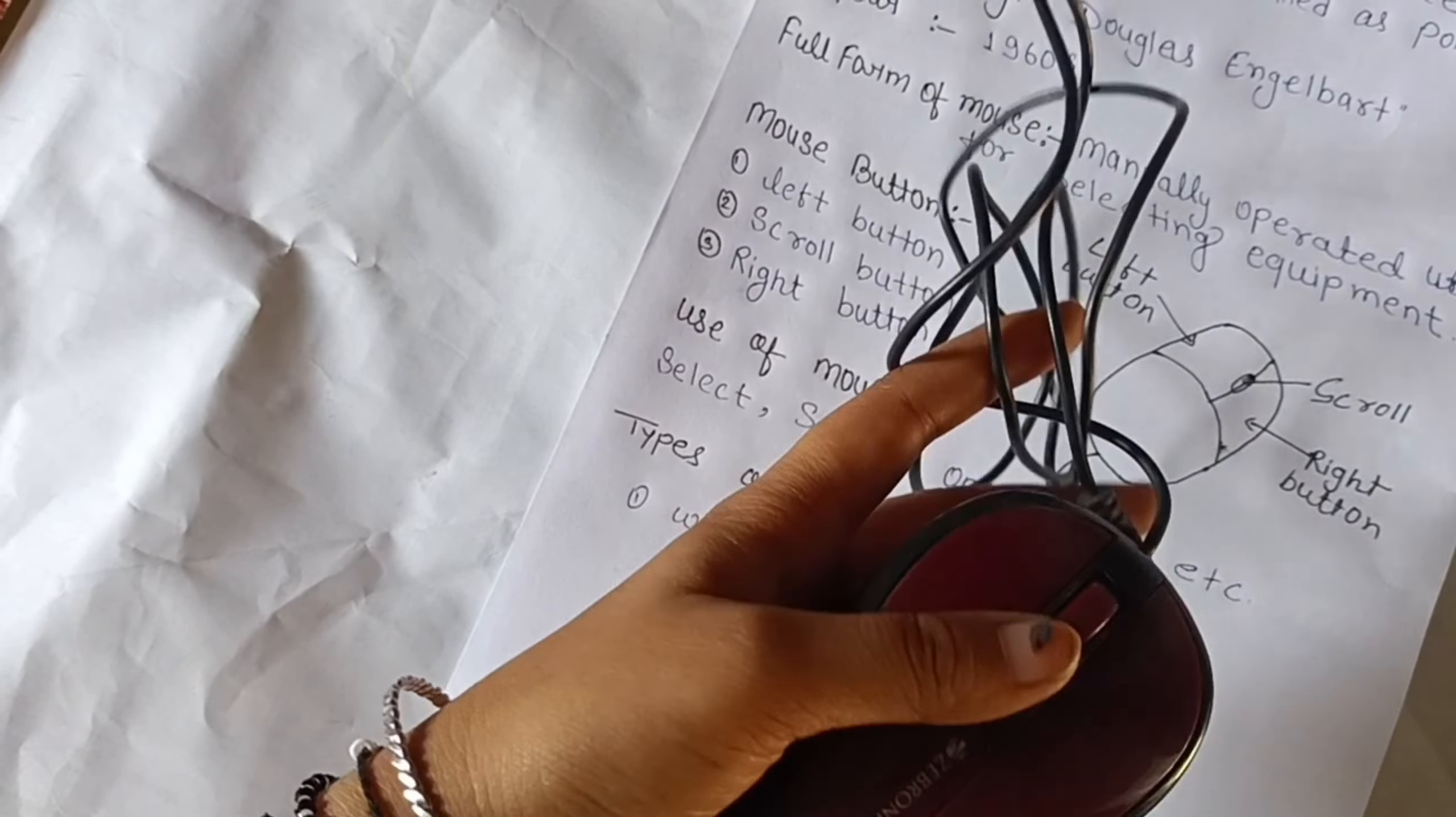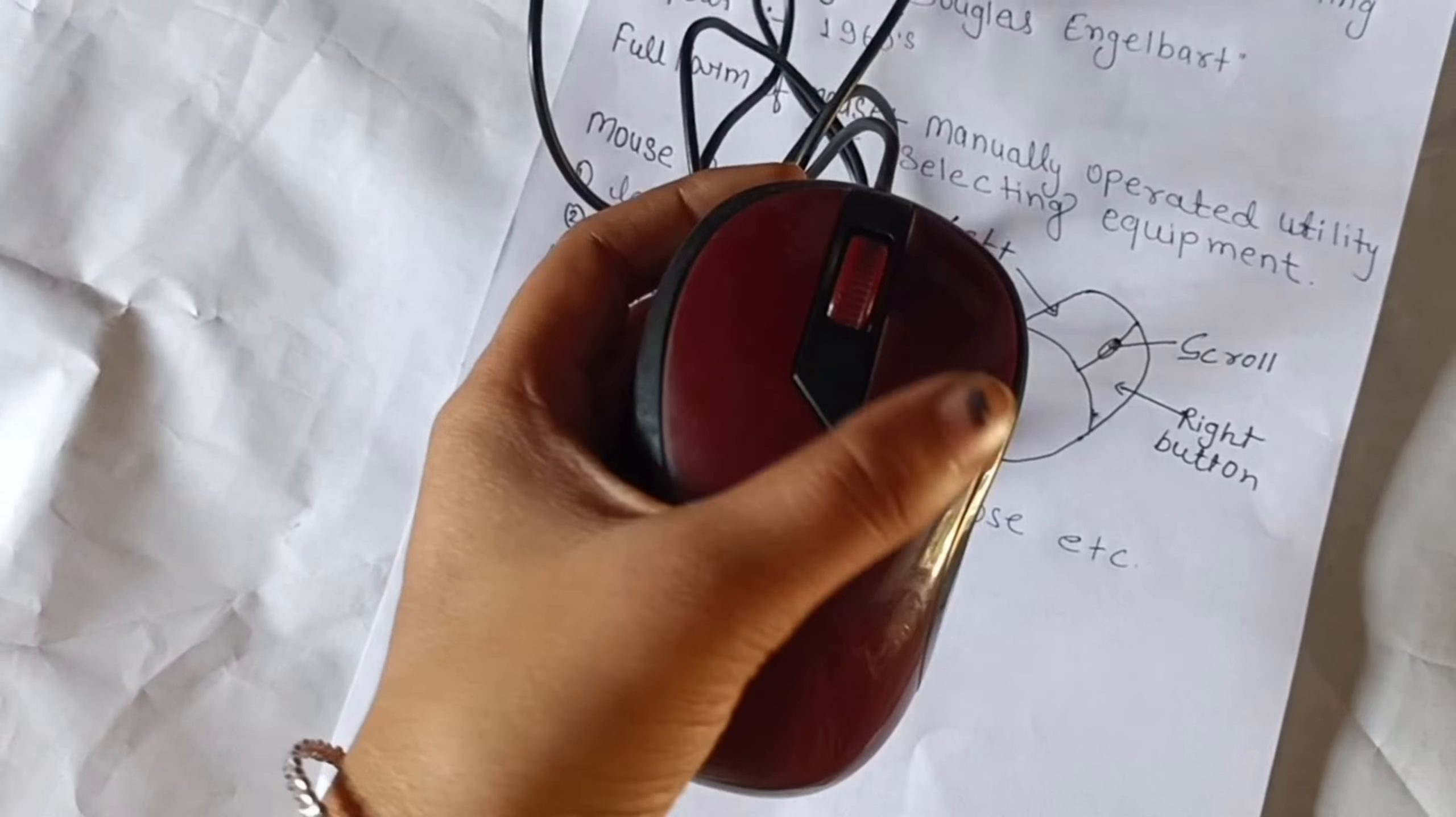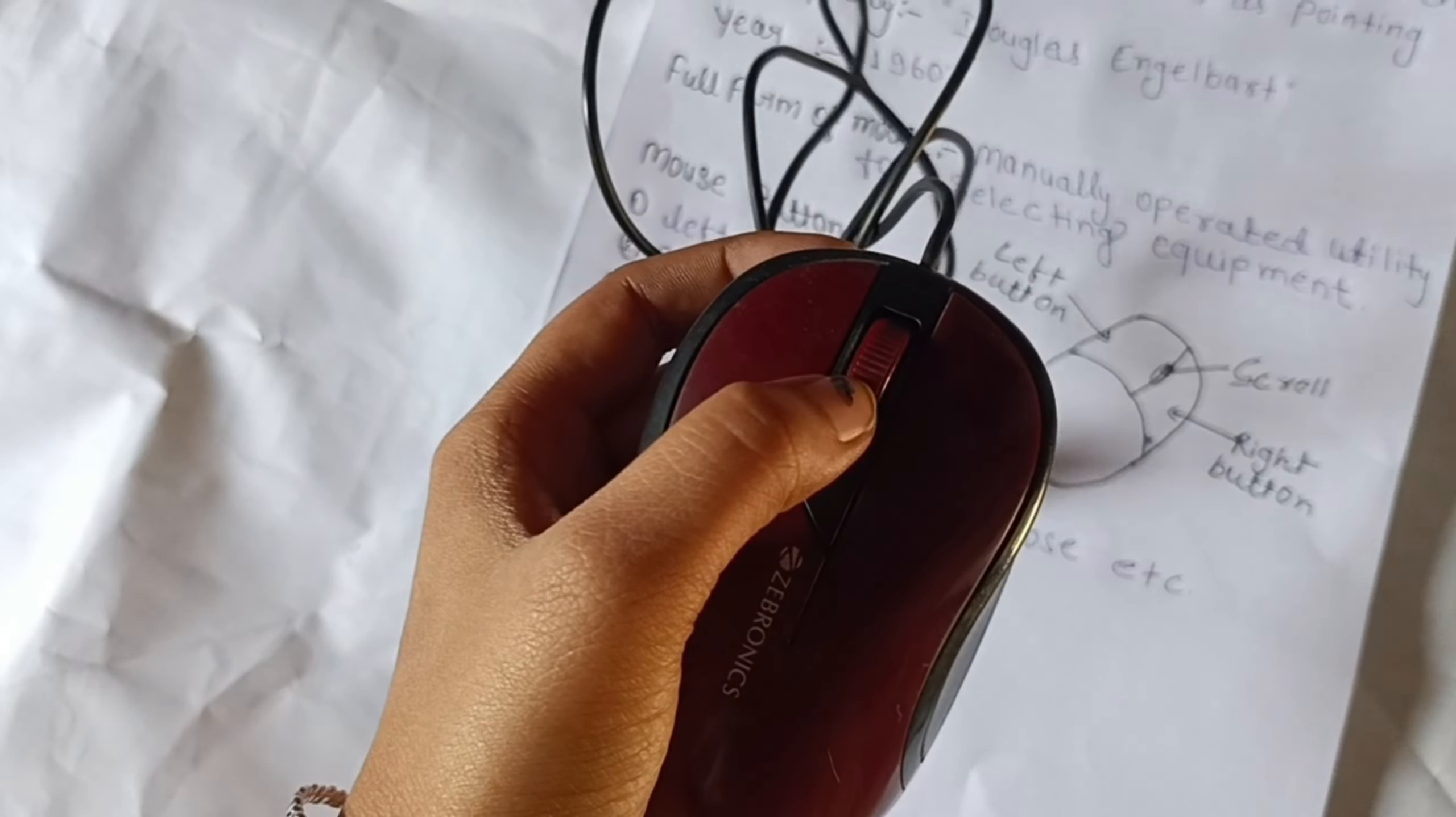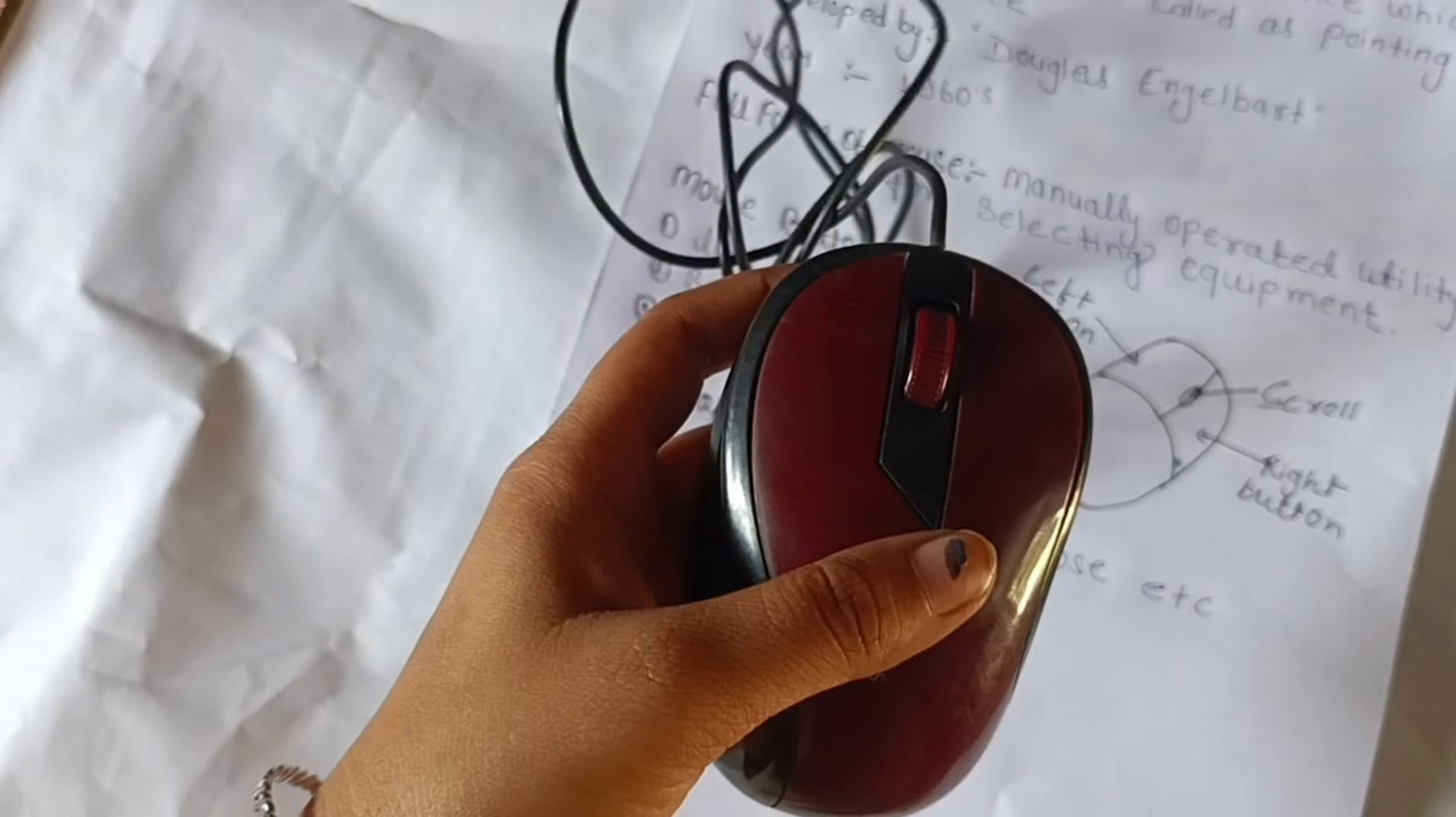This is a wired mouse. This is the left button, and this is the right button. This is the scroll button. We scroll with it. This is a wire mouse.